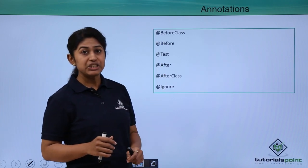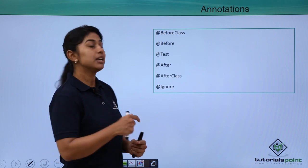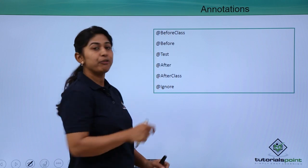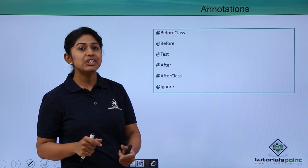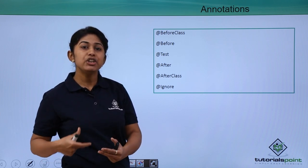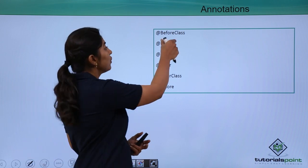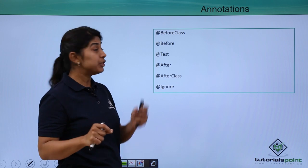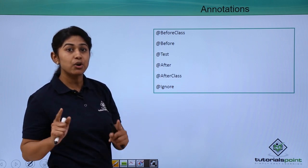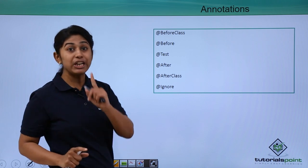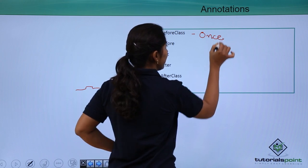These are the annotations in JUnit which you give prior to the method definition. The very first annotation is @BeforeClass. This annotation is used to initialize any object that you are going to use in your test case or your running tests. Whenever you initialize any object in the @BeforeClass method, it will be initialized or invoked only once. So this method is executed only once.